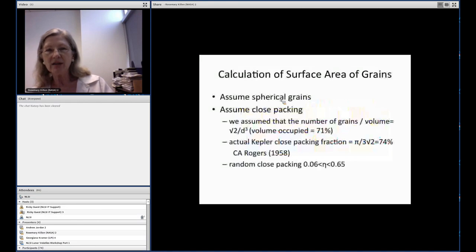This is work in progress, something we've done recently. We assumed spherical grains and close packing. If you do a simple calculation, you can show that the volume occupied by the grains in close packing is about 71 percent. If you do a Kepler close packing calculation, you come up with 74 percent.